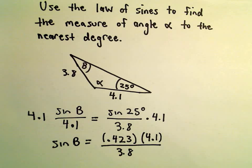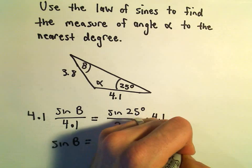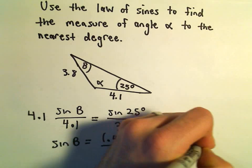So, 0.423 times 4.1. Let's try this one more time. 0.423 times 4.1. Okay, then I'm going to divide that by 3.8. I'm getting this to be approximately 0.456.